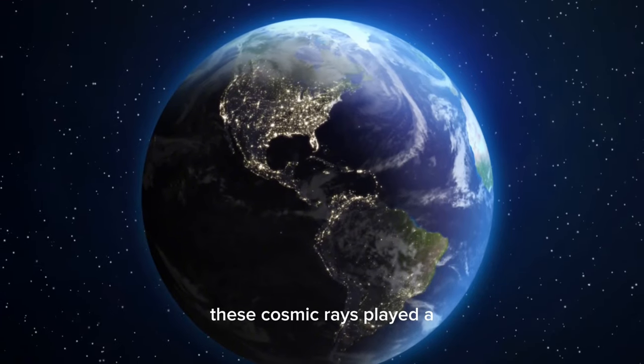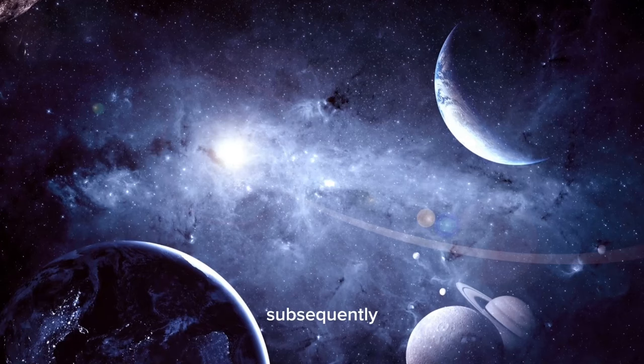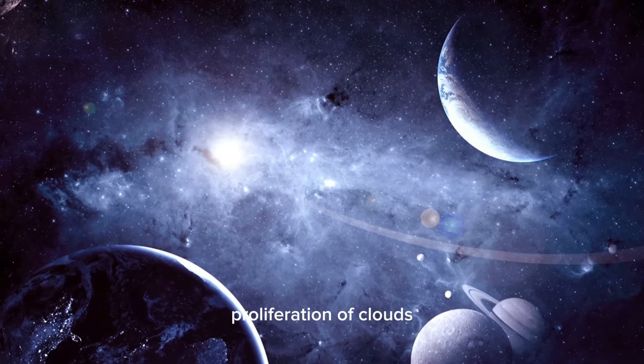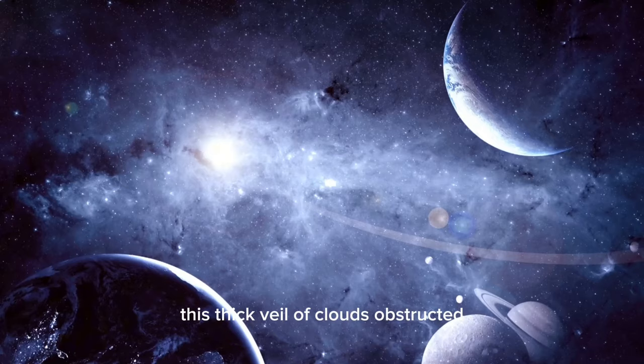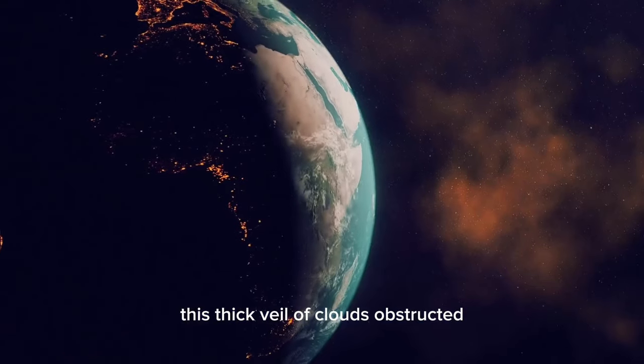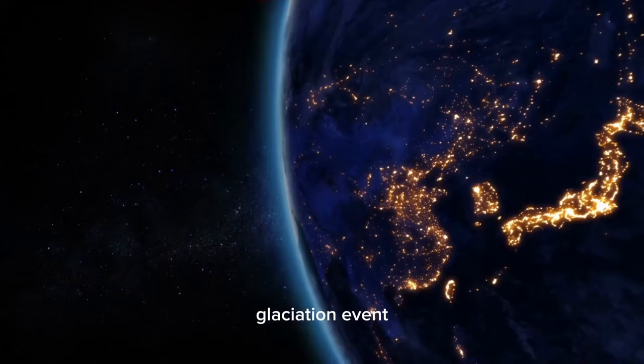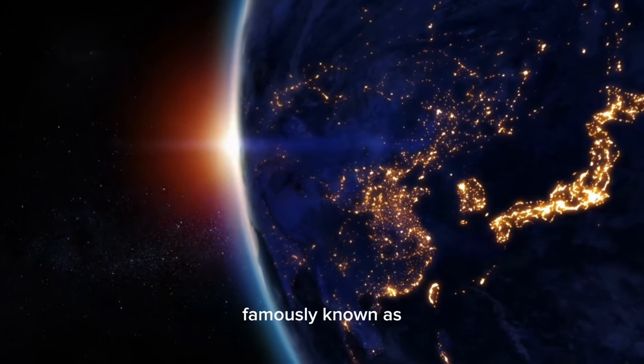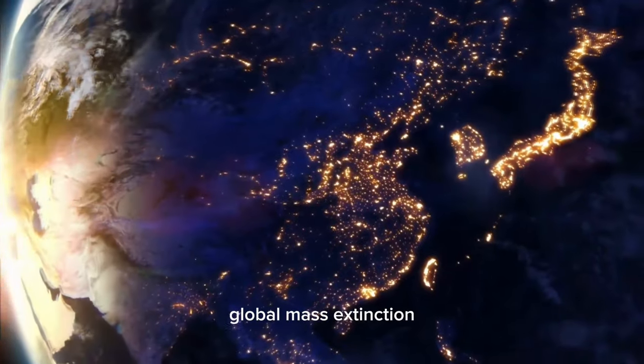These cosmic rays played a crucial role in generating cloud condensation nuclei, subsequently leading to the proliferation of clouds until Earth was entirely shrouded in their cover. This thick veil of clouds obstructed sunlight from reaching the planet's surface, precipitating a global glaciation event, famously known as the Snowball Earth, and resulting in another global mass extinction.